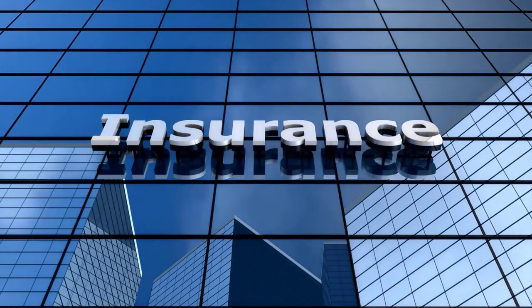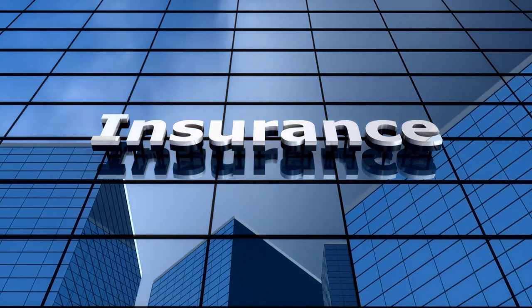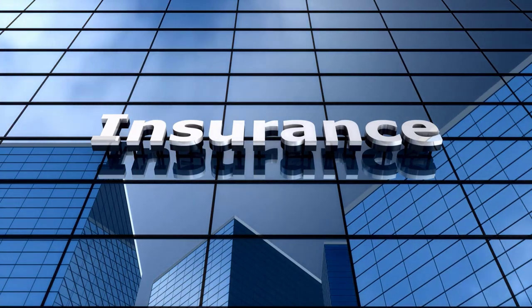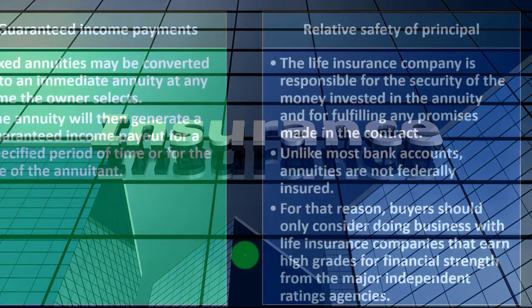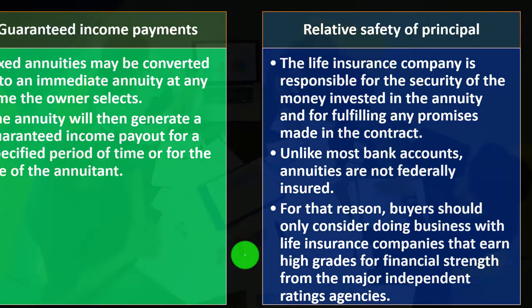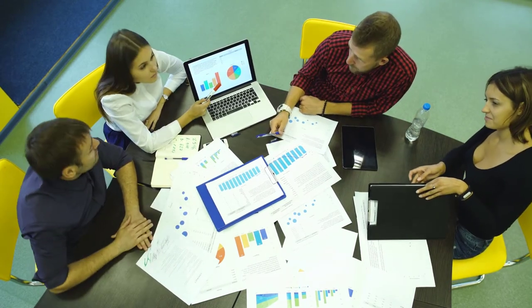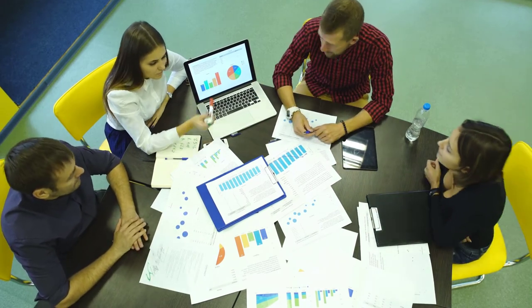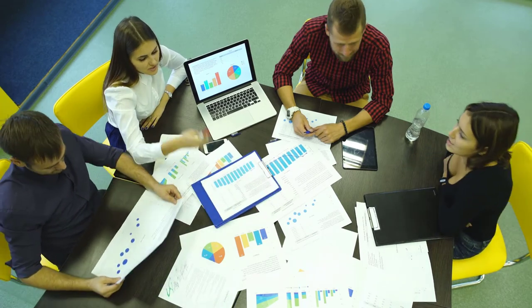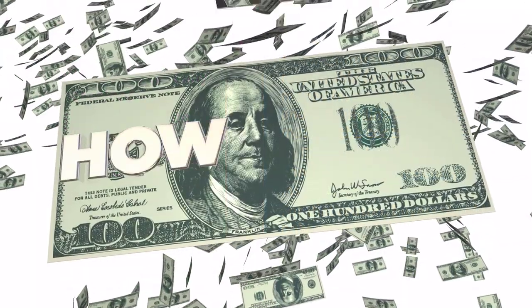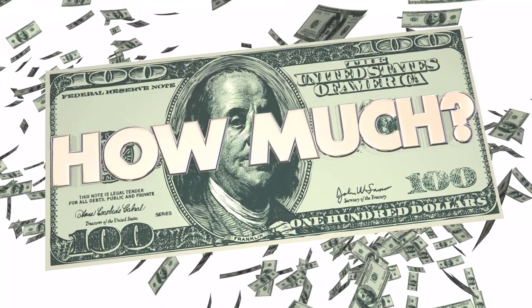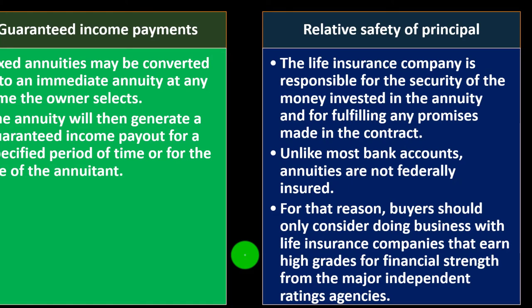Unlike most bank accounts, annuities are not federally insured. Federal insurance on banks is meant to prevent bank runs — if a bank went out of business, the government would cover depositors. There's not the same assurance with insurance companies. However, insurance companies do invest the money similarly to banks. If the stock market crashed and an insurance company made poor investments, it could potentially go bankrupt. For that reason, buyers should only consider doing business with life insurance companies that earn high grades for financial strength from major rating agencies.